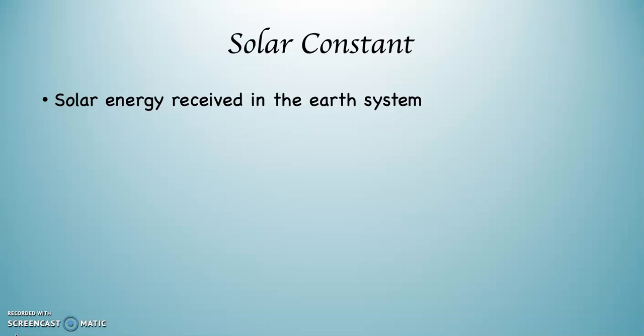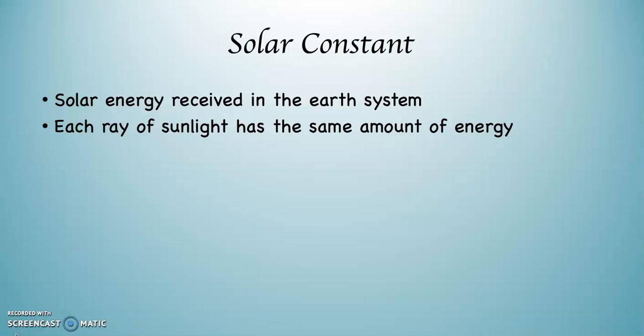What the solar constant says, essentially and fundamentally, is this: each ray of sunlight has the same amount of energy in it. There's 1,376 watts per square meter. It doesn't really matter what unit you use — square inches, square feet, square miles — as long as you use consistent units. The basic fundamental information is the same: as the sun blasts energy out into space, each ray of sunlight always contains the same amount of energy.